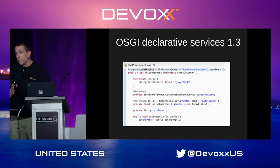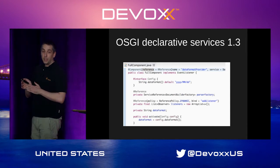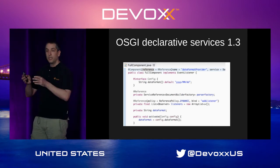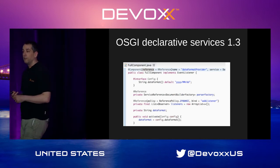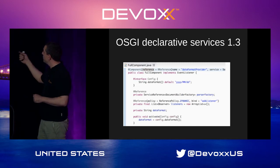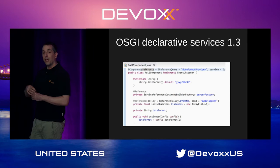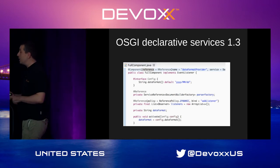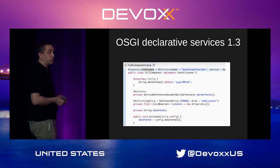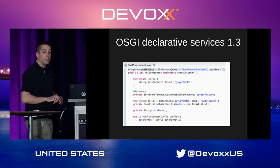We're also supporting OSGi declarative services 1.3. Thomas Watson, sitting in the audience, integrated Felix for that into Equinox, and Peter Nera implemented the support for using it. Basically, you have an annotation and this annotation causes a service to be registered later, and that service can be used in your application via dependency injection. It's really nice to use.